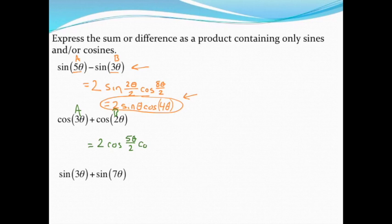This one won't divide out evenly, but that's just fine. Then times the cosine of A minus B, which is θ over 2. Since these can't be simplified, I'm just going to put them in parentheses. There is my product answer.